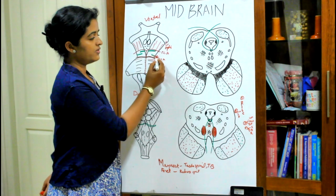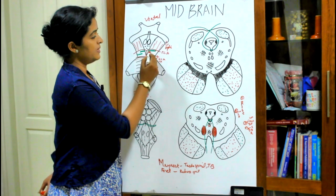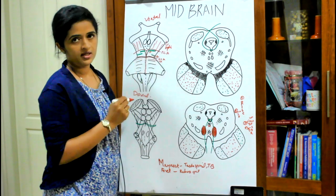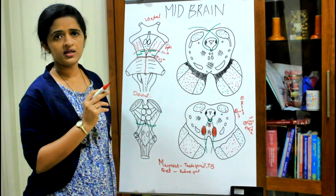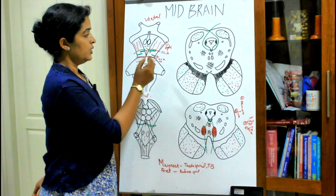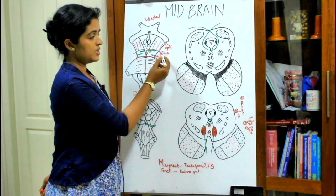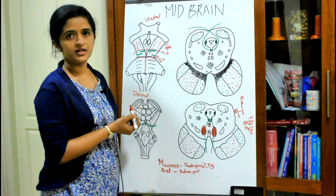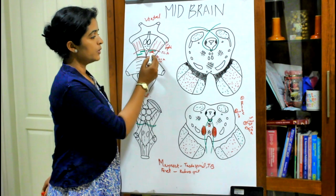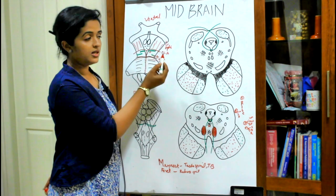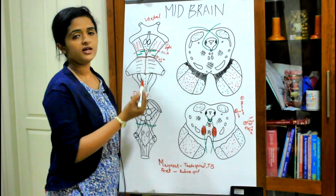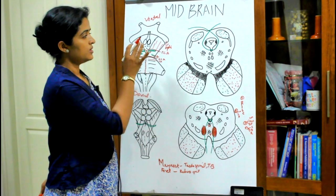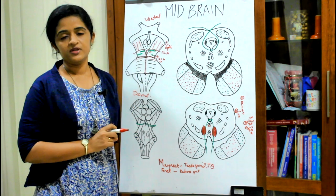Laterally you have the fourth cranial nerve (trochlear) and medially you have the oculomotor or third cranial nerve. One more important point: both cranial nerves are seated between the posterior cerebral artery and the superior cerebellar artery. That covers the ventral aspect of the midbrain.